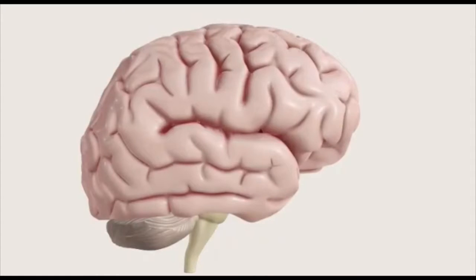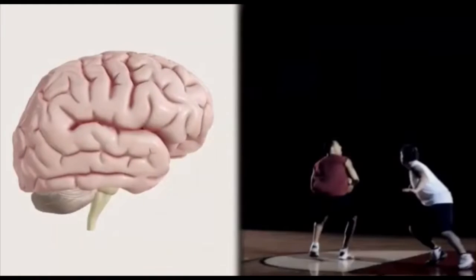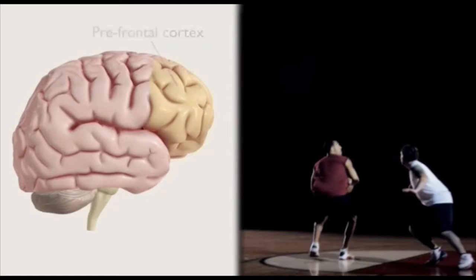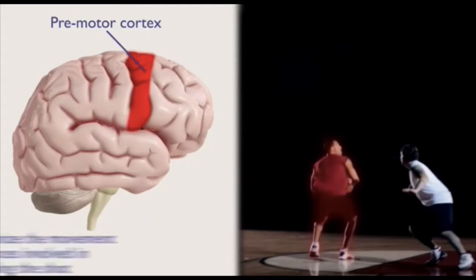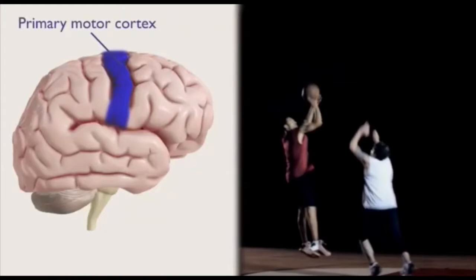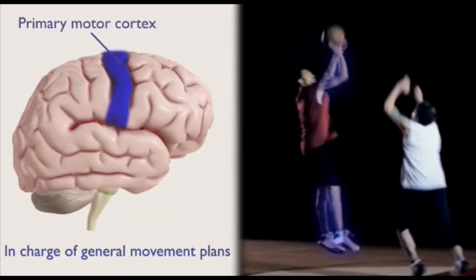There are different parts of the cortex, and they must all work together to produce normal movement. But each part has a specific role. Consider a basketball player executing a jump shot. The prefrontal cortex is involved in the planning of the shot. The premotor cortex helps organize the movement sequences involved in taking the shot before the shot is actually executed. The primary motor cortex is in charge of general movement plans, like the arm and leg movements involved in taking the shot.